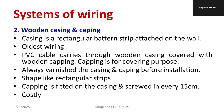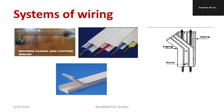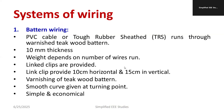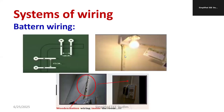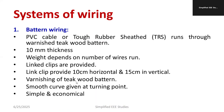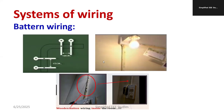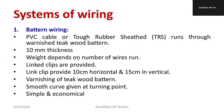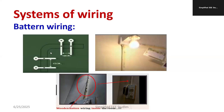The batten is usually made of wood with a thickness of 10 millimeters. The PVC cable carries through the wooden casing, covered with wooden caping, which serves a covering purpose. The total weight depends on the number of wires run. Link clips are used to fix the cable in place — you can see the different types of link clips. The varnished teak wood batten is used, making it a bit expensive.